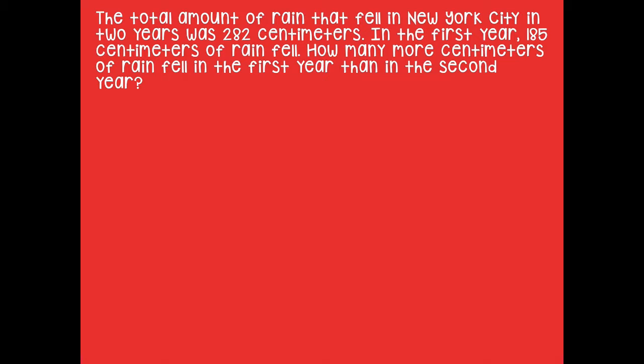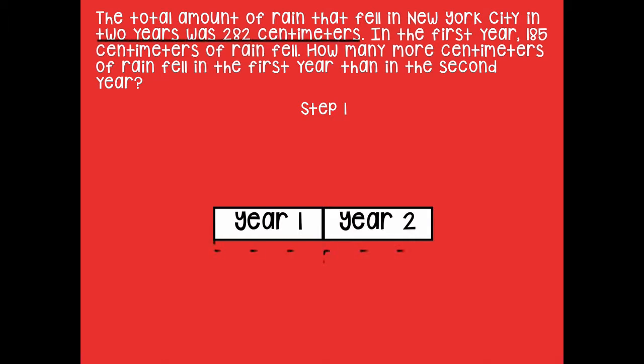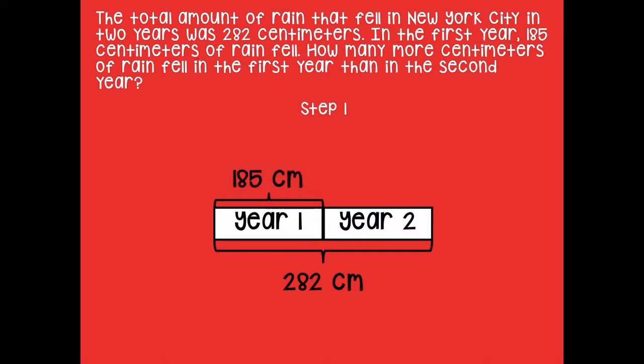So here's what I came up with. The first model is a tape diagram for step one. I have year one and year two. We know that combined, the two years had 282 centimeters of rain. The first year had 185 centimeters, so I'll label that on my tape diagram. Year two I don't know, so I'm going to label that as R for rain — that's what makes sense to me. You can use any letter you like, as long as you're consistent.